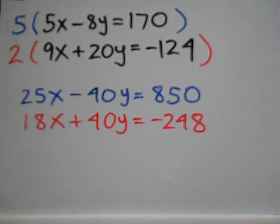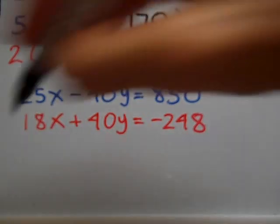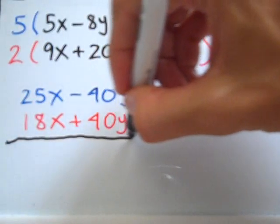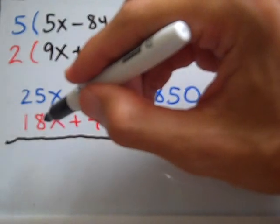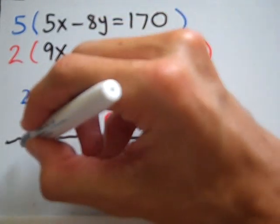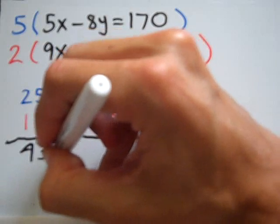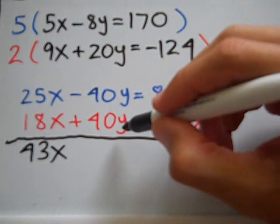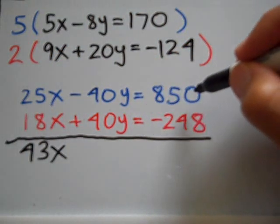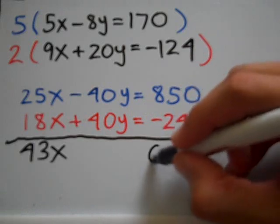So now it's a matter of combining the red equation and the blue equation. So combining these two equations, what I will have is 25x plus 18x, which is 43x, negative 40y plus 40y is 0 and 850 minus 248 is 602.